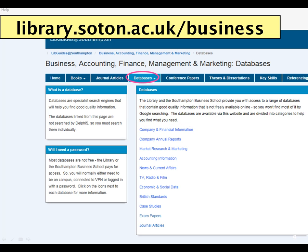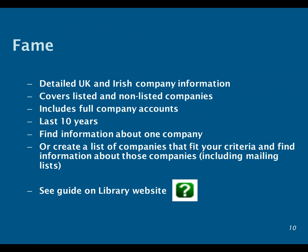There's not time in this video to introduce you to all the databases, but I want to point out some of the key ones that will be most useful to most people. Starting with company and financial information: one of our main databases is called FAME, and this provides very detailed information about UK and Irish companies. It covers all companies including both listed and non-listed — so public and private companies. It includes full company accounts for up to 10 years. You can either look at one company in detail or create a list of companies and download specific information about those companies. There is a guide to FAME which you will find under the green question mark.